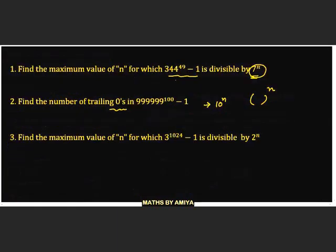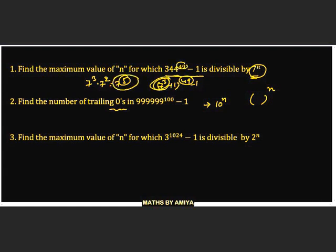For Question 1: 344449 − 1. We write 344 as 7³ + 1, so this becomes (7³ + 1)^49 − 1. We are looking for the number of 7s, so we multiply the base power (3) by the exponent (49): 7³ × 49 = 7³ × 7² = 7^5. So this number is always divisible by 7 raised to power 5.